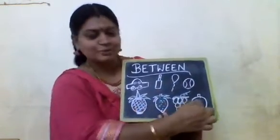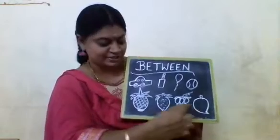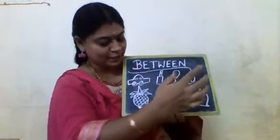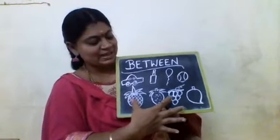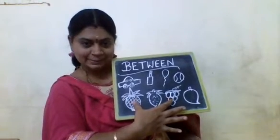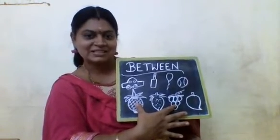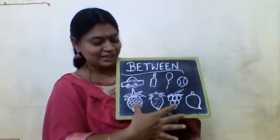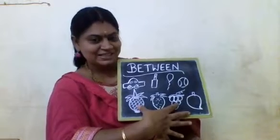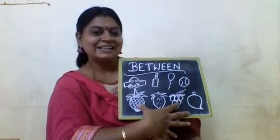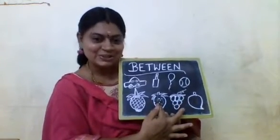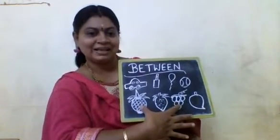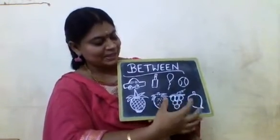Let me explain to you with the fruit pictures. A pineapple, strawberry, grapes and mango. What fruit is there between pineapple and grapes? Can anyone tell me what is there between pineapple and grapes? Yes. Strawberry. So between pineapple and grapes, strawberry is there.